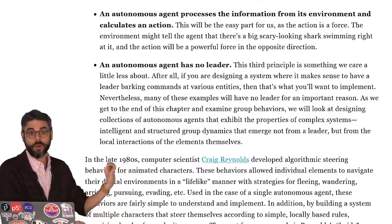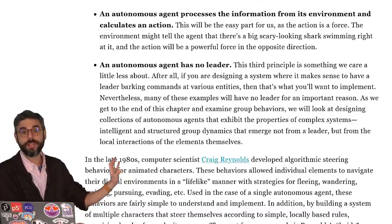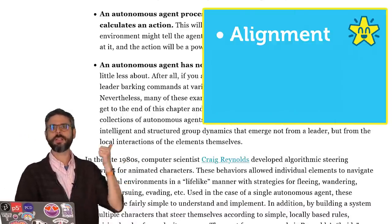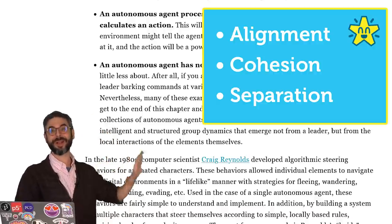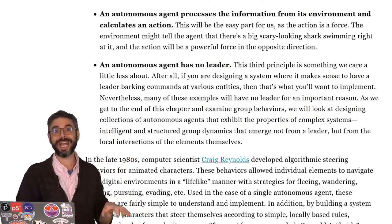comes from all of the small local interactions between all these little triangles moving around the canvas. Each one of these, what are actually called boids, just follows three simple rules. Alignment, cohesion, separation. I'm going to get to those rules in a later video where I go through this in detail. They're easy to understand and easy to define.